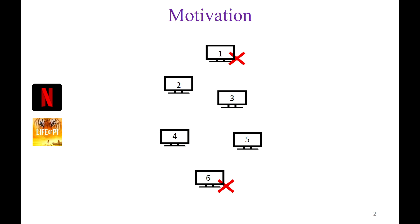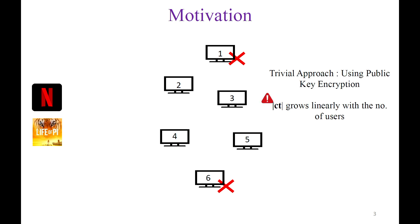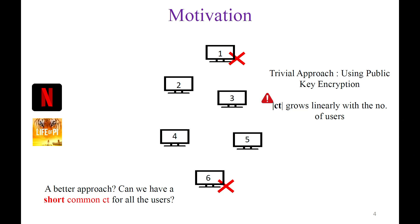Let us begin with the motivation for our problem. Consider content distributors like Netflix that want to share a movie with its users. The guarantee they want is that only subscribed users should be able to access the movie. One trivial approach is using a public key encryption scheme, encoding the movie with the public key of each subscribed user. But the ciphertext size grows linearly with the number of users — potentially millions — which is obviously a problem. Can we have a short common ciphertext, sublinear or even logarithmic in the number of users?